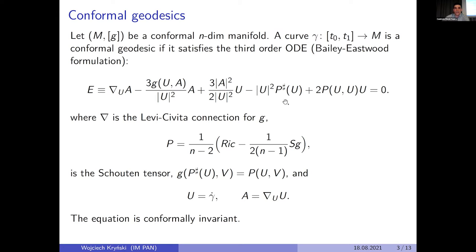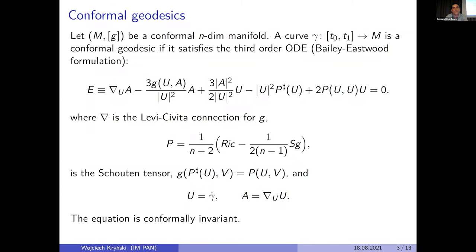P is the Schouten tensor. One can check that this expression, though a priori dependent on the choice of metric in the conformal class, is in fact independent of that choice — it transforms conformally and this equation is conformally invariant. Conformal geodesics, or conformal circles, are by definition exactly the solutions to this third-order system of ODEs.